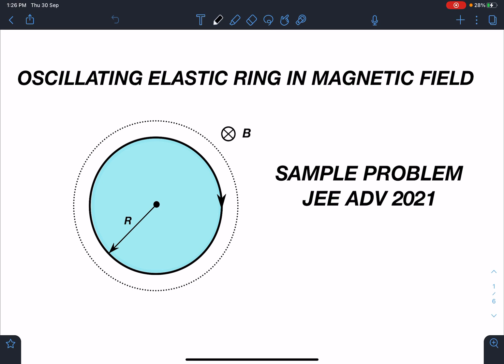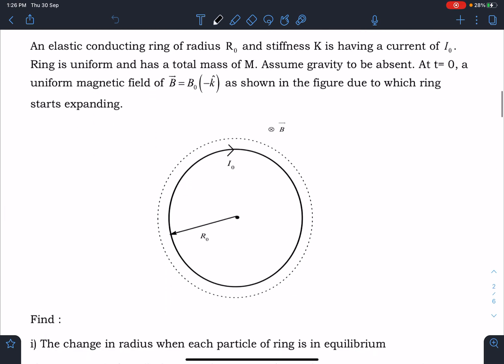Maybe a problem involving these kind of concepts or similar difficulty level you may see in Advanced 2021, or it may go like last year very very difficult paper also. This is the second sample problem. Here is the problem statement: An elastic conducting ring of radius R₀ and stiffness K is having a current of I₀. Ring is uniform and has a total mass of M. Assume gravity to be absent. At t=0, a uniform magnetic field of B = B₀(-k̂) as shown in the figure due to which ring starts expanding.